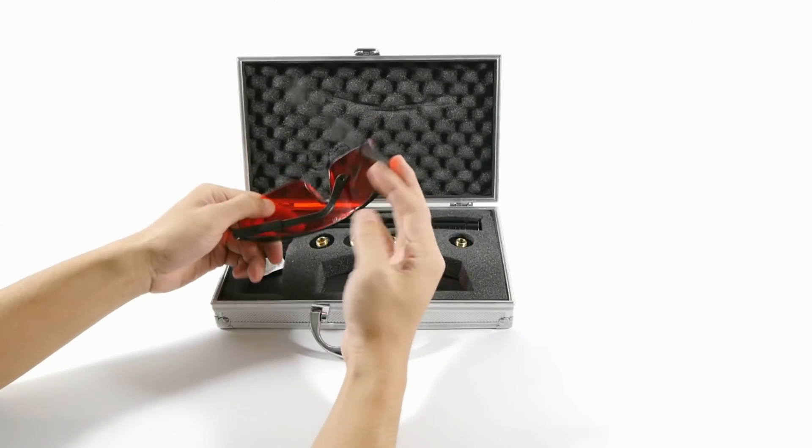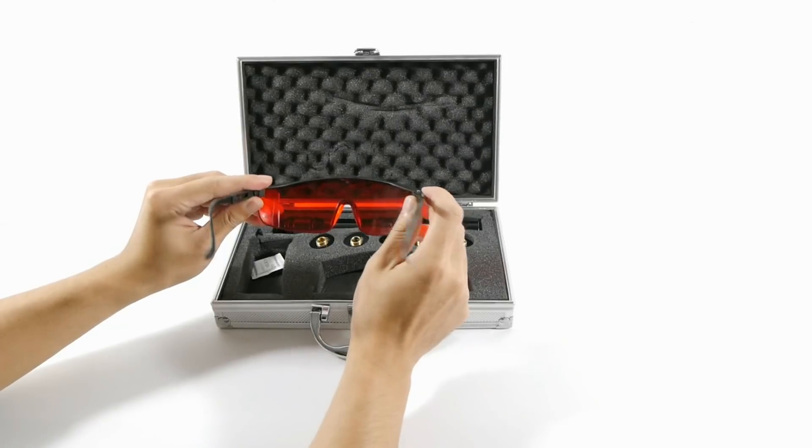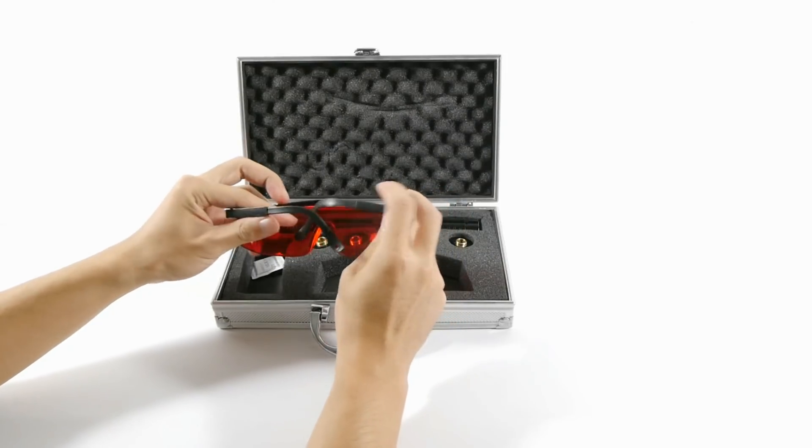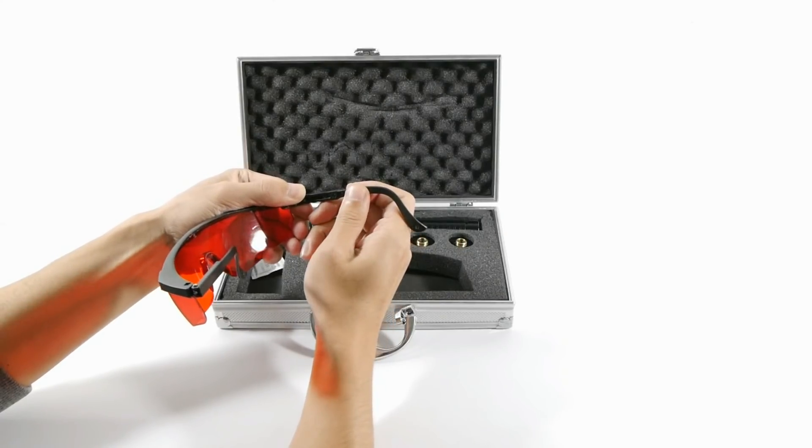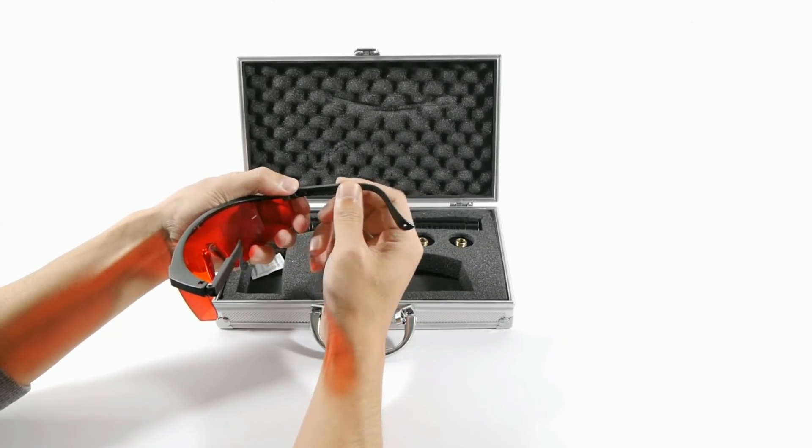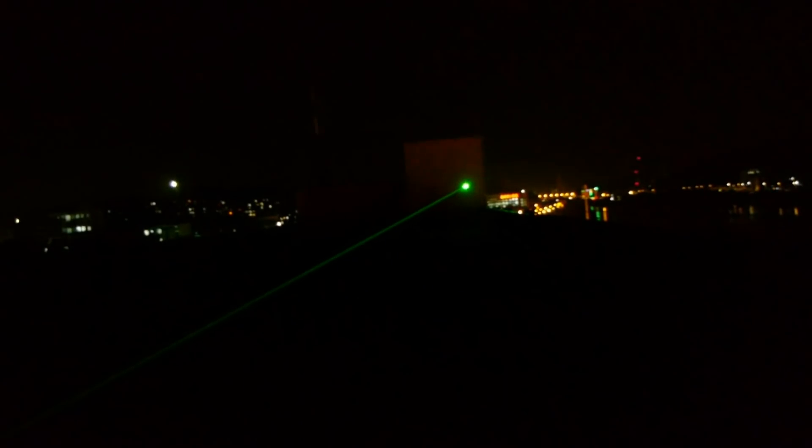With every laser sold, it includes orange tinted safety glasses that cut down on green light. These are useful when doing experiments involving looking at the beam at close range. It is still possible to see the laser dot through the glasses. This is good to be able to monitor and control where the beam is pointing.